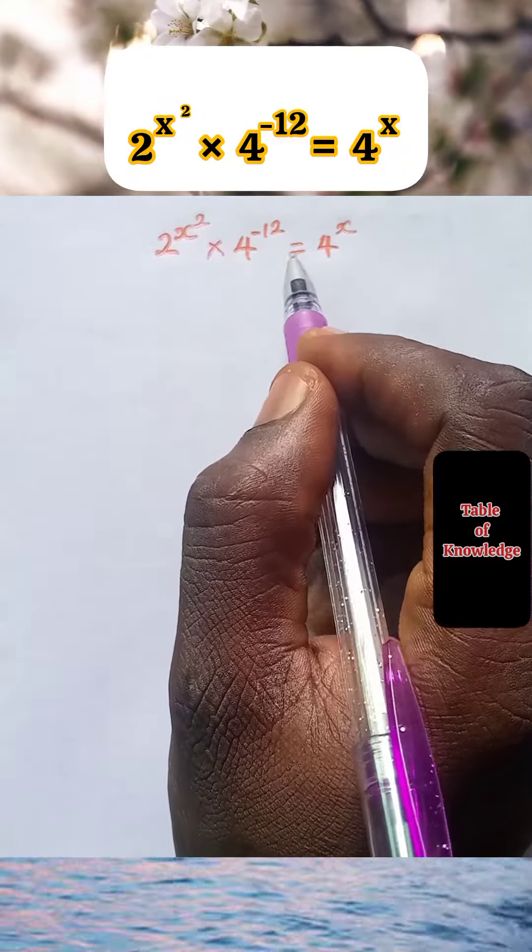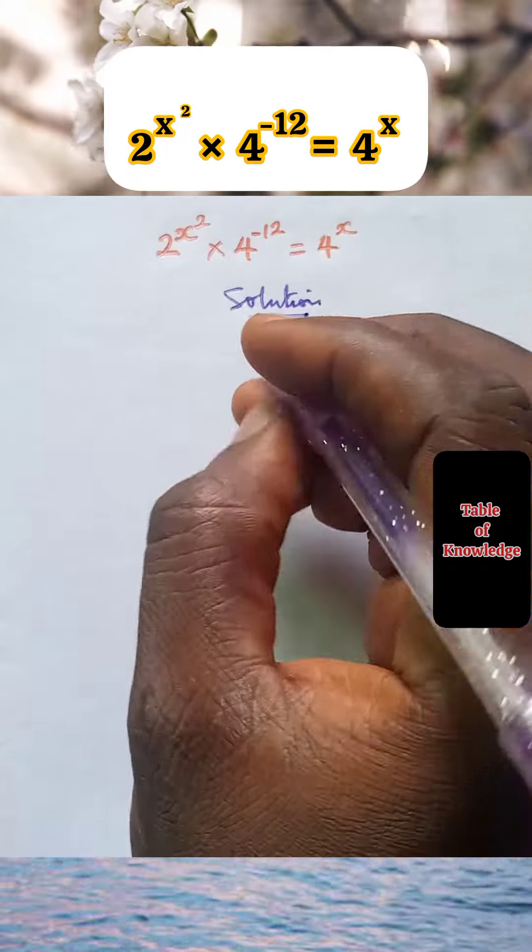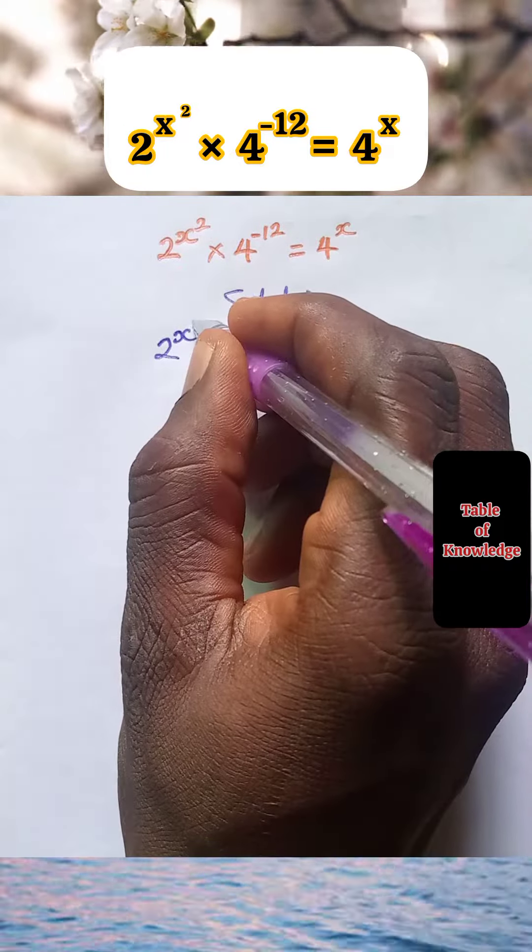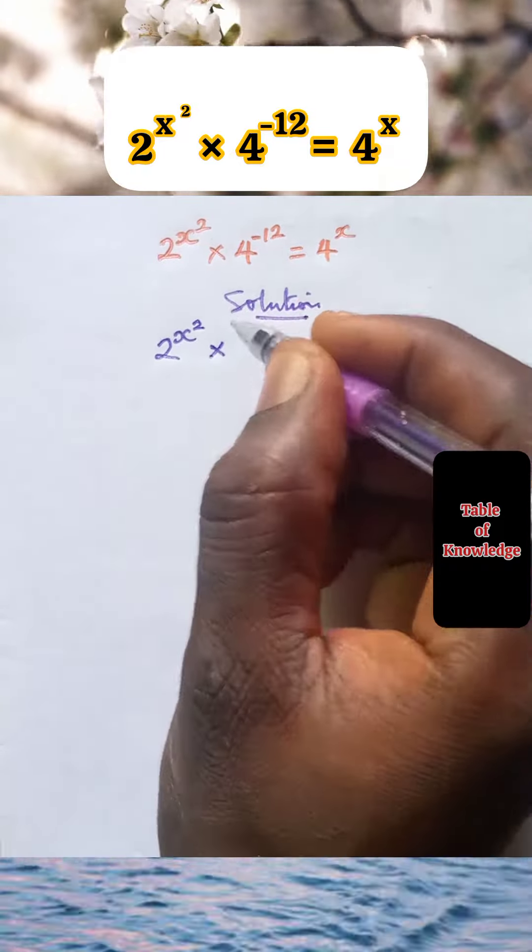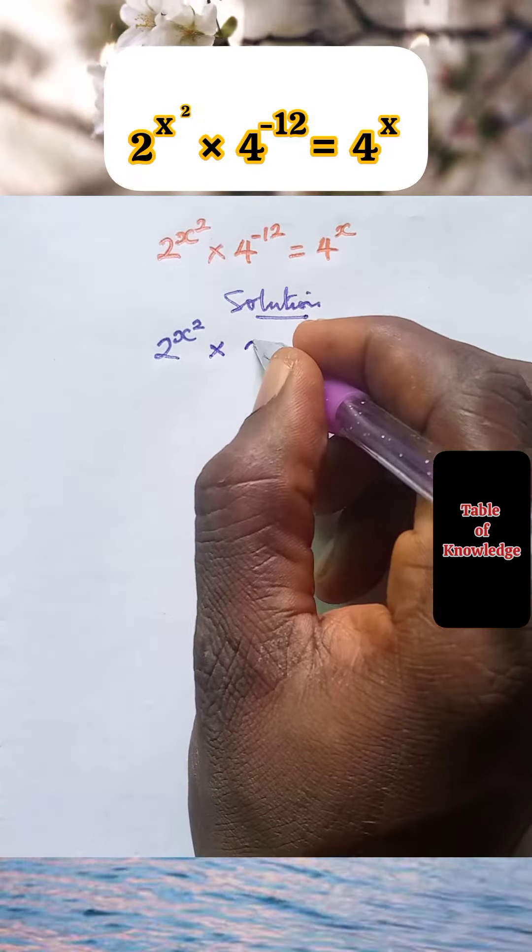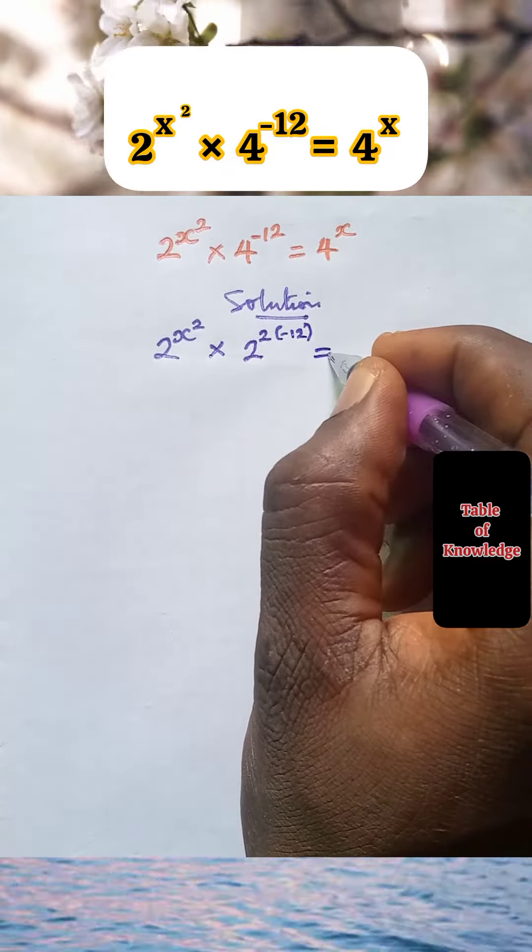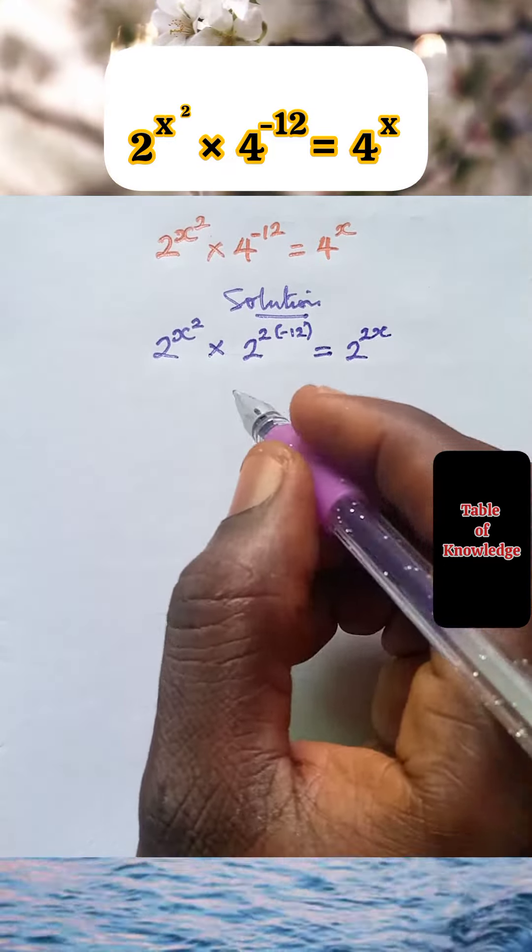Let us solve this exponential equation. We have 2 raised to power x squared times, we are going to express this 4 in base 2, which is 2 raised to power 2, in bracket to the power minus 12, equal to the same thing here, 2 raised to power 2x.